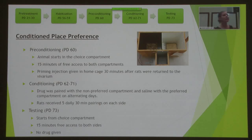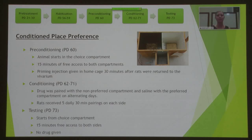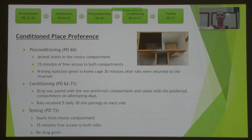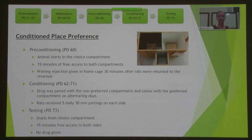We paired the drug with the side the animals least preferred, to ensure it was the effect of the drug — not the chamber — influencing their preference. We did five daily pairings with the drug and five daily pairings with the vehicle, alternating over 10 days. After that, we waited another 24 hours and then gave them free access to both sides for 15 minutes to find out if their preference had changed.